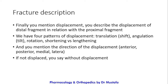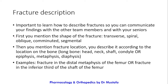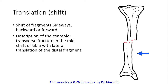After mentioning the fracture shape and location, you describe the displacement of the distal fragment in relation to the proximal fragment — always remember: distal fragment in relation to the proximal fragment. There are four displacement patterns: translation (also called shift), angulation (tilt), rotation, shortening, and lengthening. You also mention the direction — anterior, posterior, medial, or lateral. If there is no displacement, you say 'without displacement.'